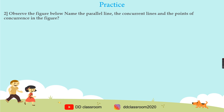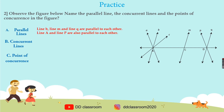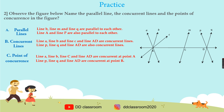Question two: Observe the figure below. Name the parallel lines, the concurrent lines, and the point of concurrence. Parallel lines: line B, line M, and line Q are parallel to each other. Line A and line P are also parallel to each other. Concurrent lines: line A, line B, line C, and line AD are concurrent lines. Line P, line Q, and line AD are also concurrent lines. Point of concurrence: line A, line B, line C, and line AD are concurrent at point A.